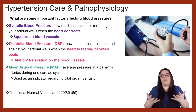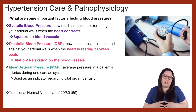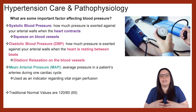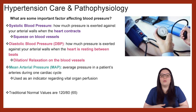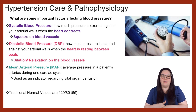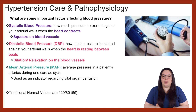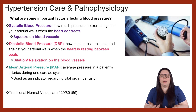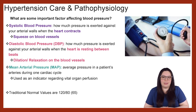So what are some important factors affecting our blood pressure? One is our systolic blood pressure — that's how much pressure is exerted against the arterial walls when the heart contracts, that squeeze occurring in our blood vessels. Next, we have our diastolic blood pressure, and that's how much pressure is exerted against the arterial walls when the heart is resting between beats — that dilation and relaxation of our blood vessels.